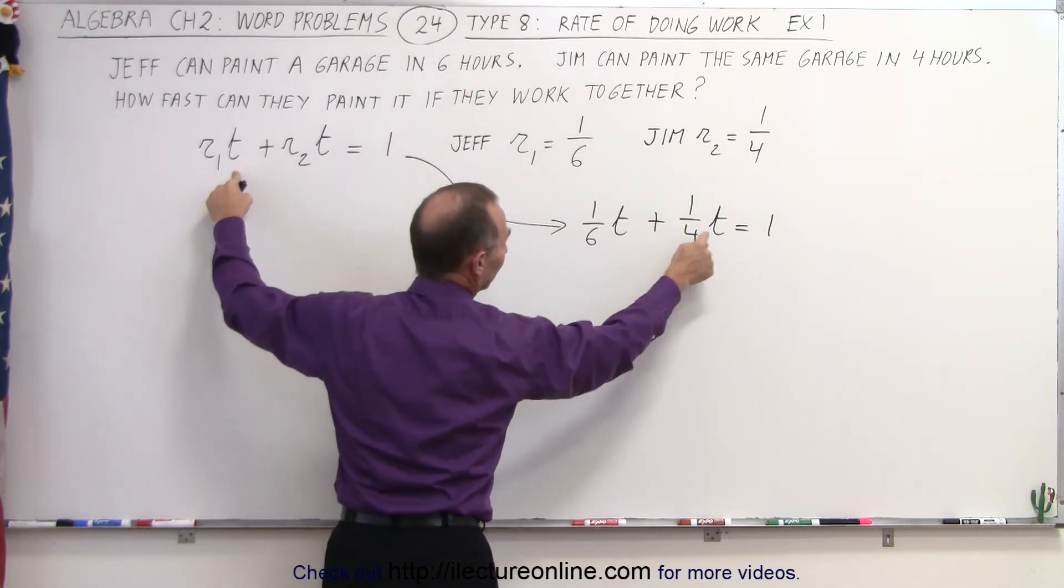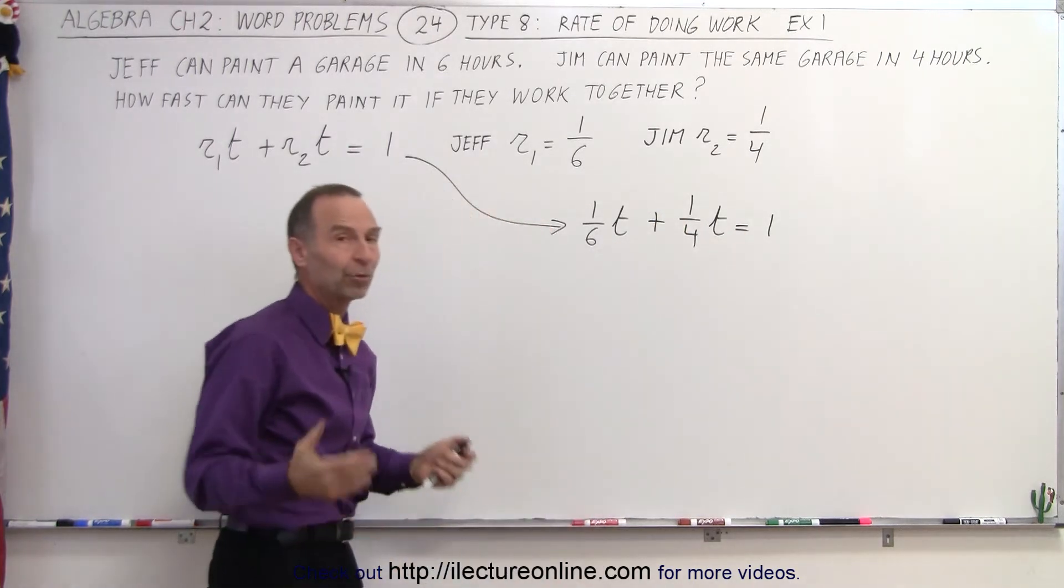Then you write the rate times the time, one sixth times the time, plus one fourth times the time equals one. Now we solve for time.